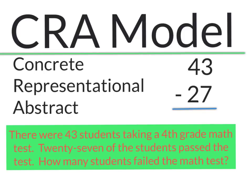Today I'm going to be using the CRA model to subtract 43 minus 27. The C stands for concrete, the R stands for representational, and the A stands for abstract.